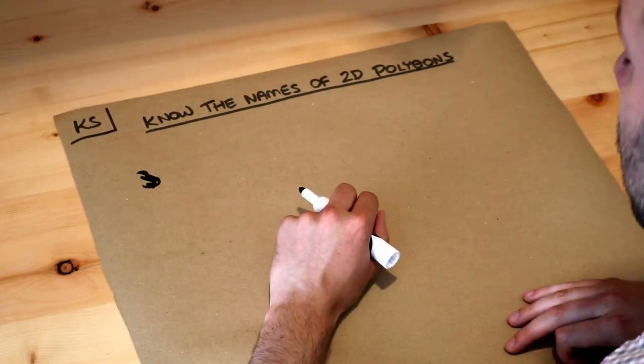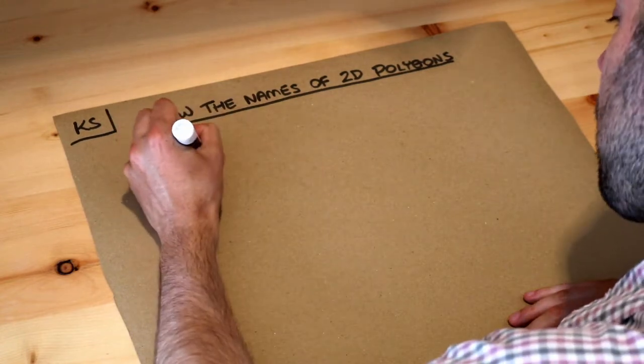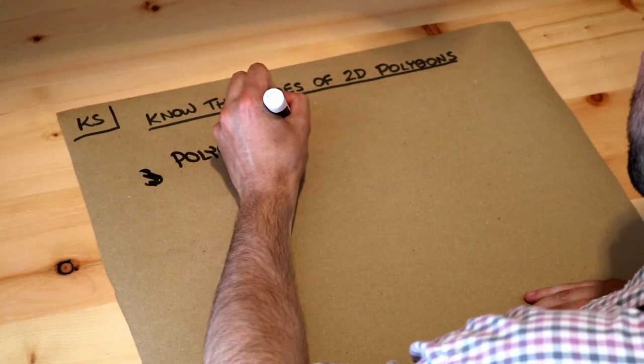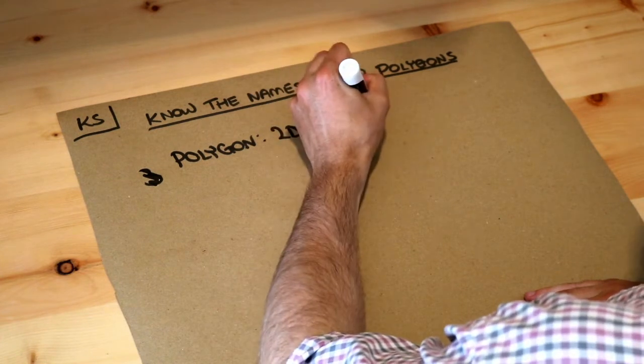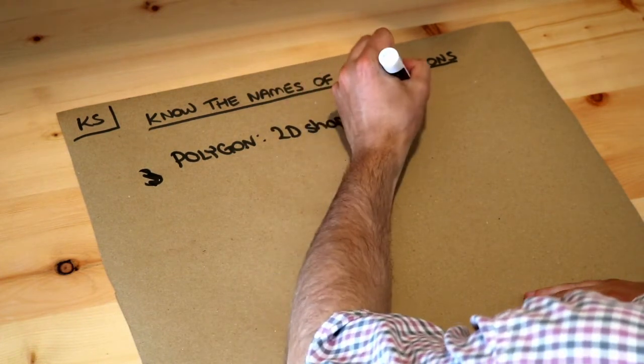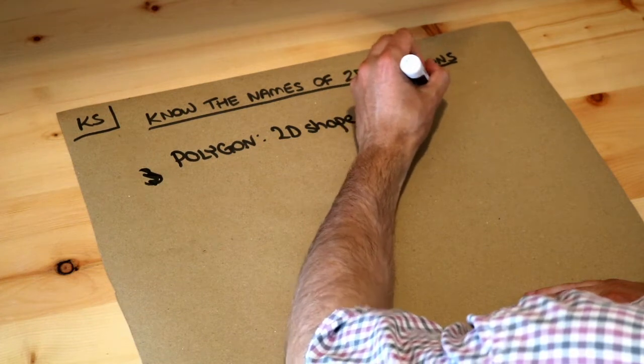So firstly let me define what polygon means. A polygon is just a 2D shape, 2D just means flat, a 2D shape with straight edges. So for example a circle is not a polygon because it does not have straight edges.